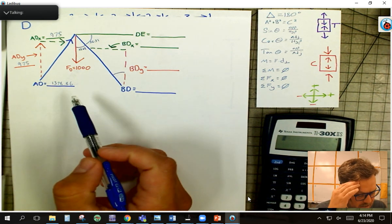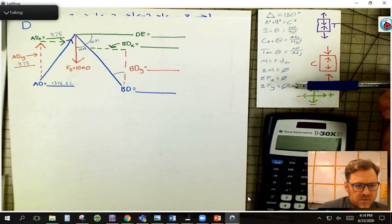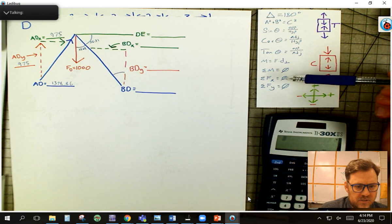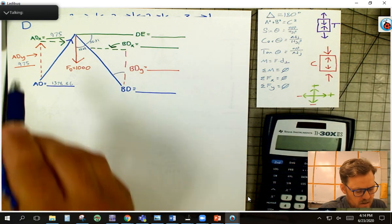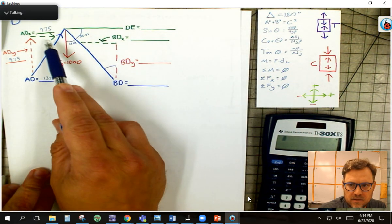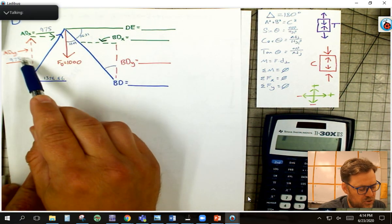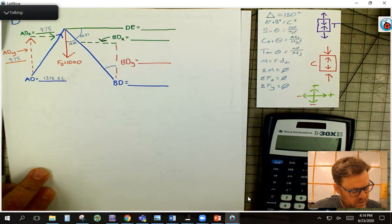So now let's look at this. When I look at these things, remember we're using pretty much sum of the moment, sum of the force of the X, and sum of the forces in the Y to solve these. I look at this guy, I have three things in the Y, here, here, and here. I have three things in the X, here, here, and here. I know two of the things in the Y, I can solve for the third one, super easy.